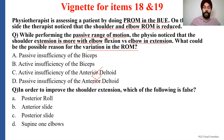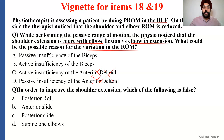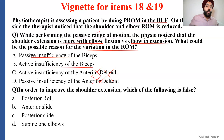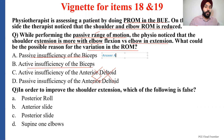Active and passive insufficiency is not applicable for one-joint muscles, so options C and D are eliminated. Now let's see what's happening in options A and B. Option A says passive insufficiency of the biceps, and option B says active insufficiency of the biceps. Let's read the question one more time: the therapist is trying to perform passive range of motion and notices that shoulder extension is more with elbow flexion versus elbow in extension. The right answer to this question is option A — passive insufficiency of the biceps.